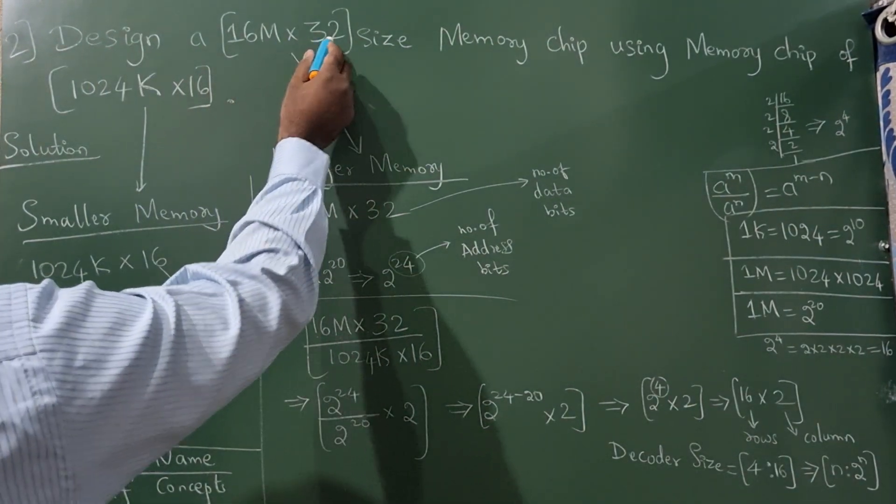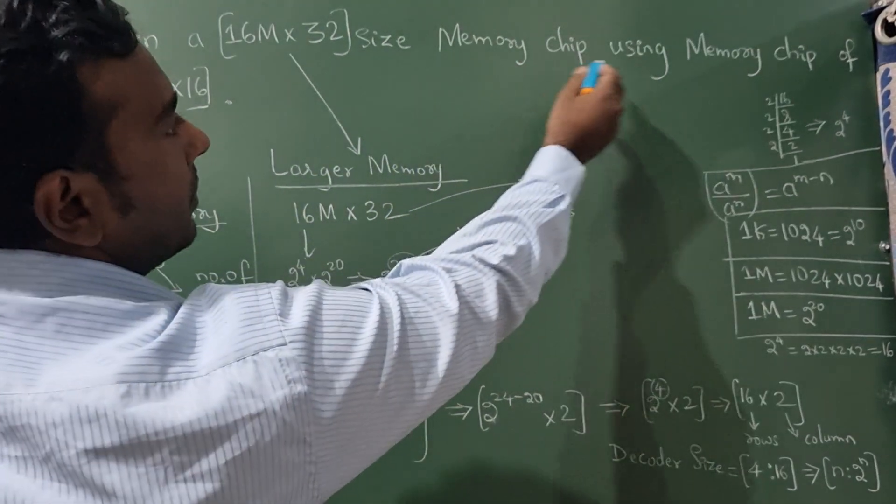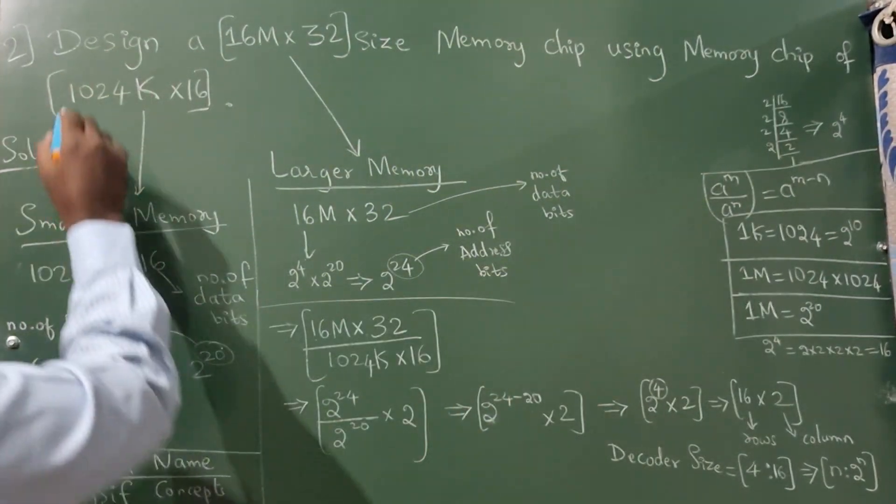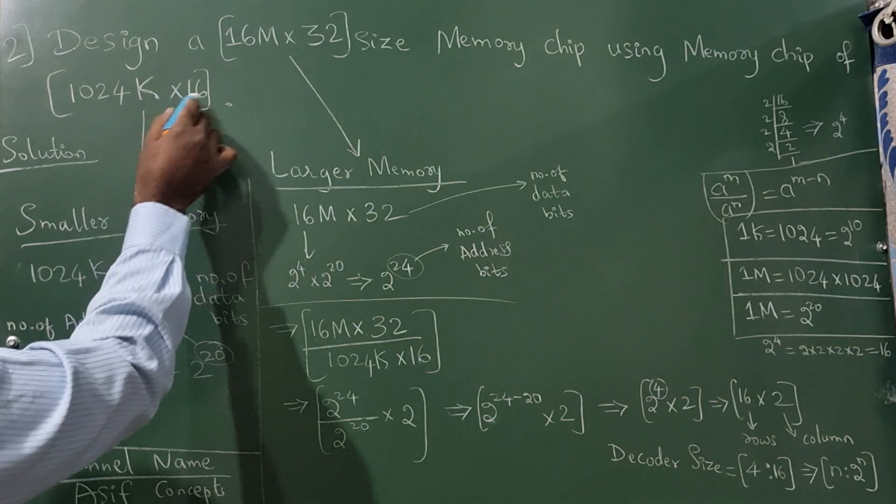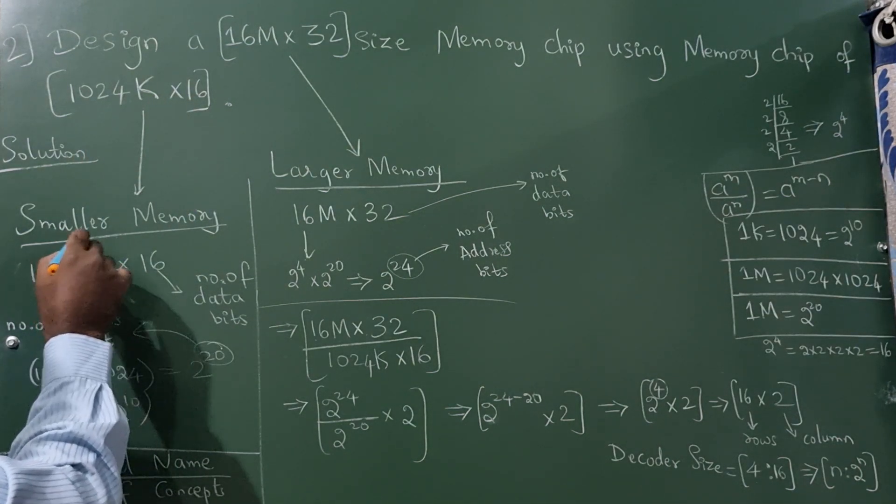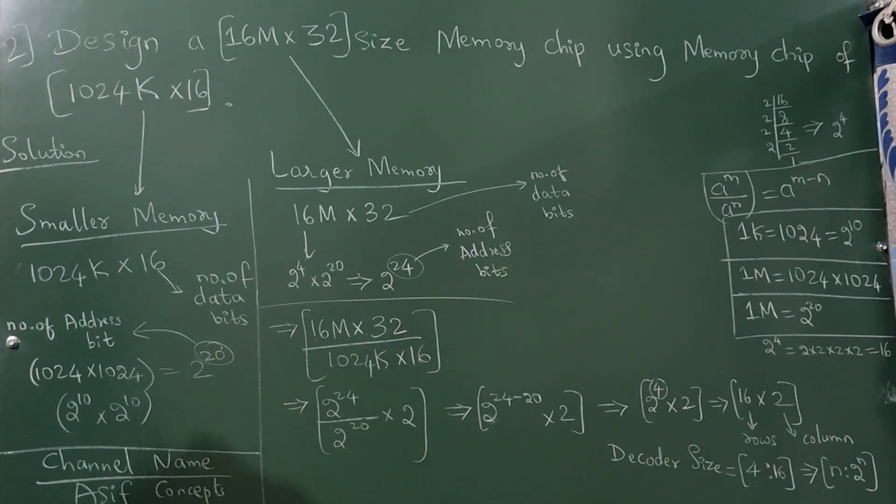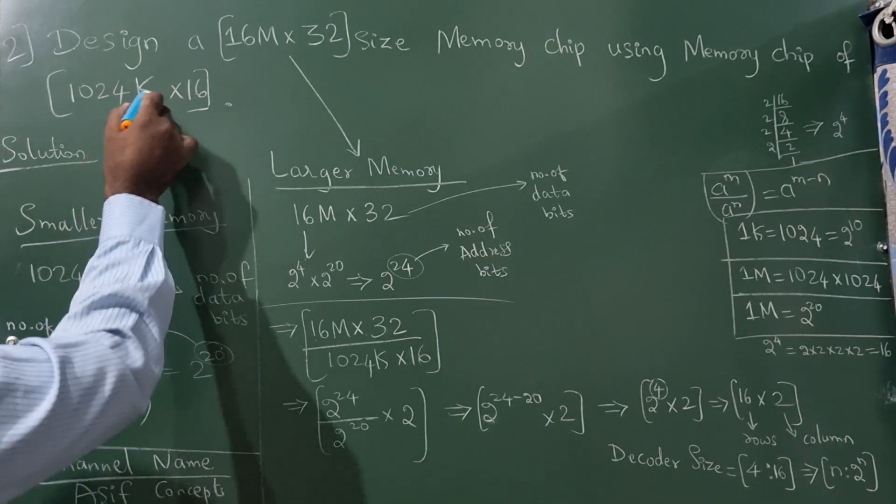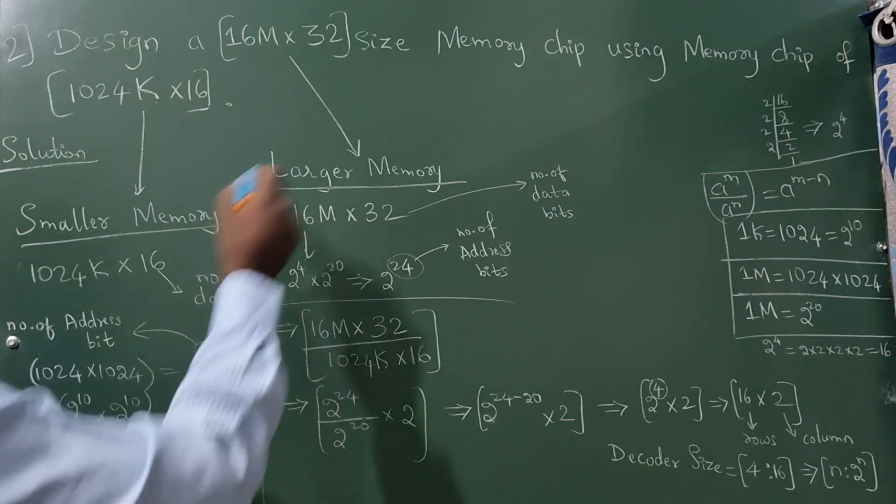Design a 16M into 32 size memory chip using memory chip of 1024K into 16. Now I have written here smaller memory and here larger memory. This is smaller memory because it contains K and this is larger memory because it contains M.